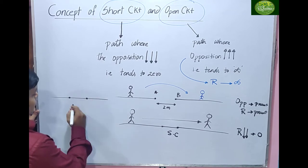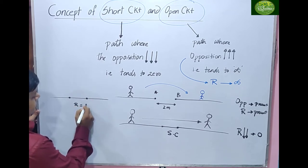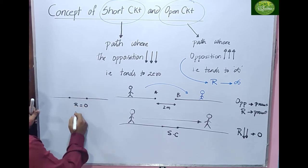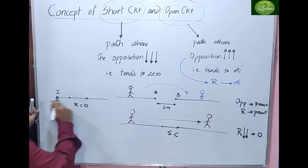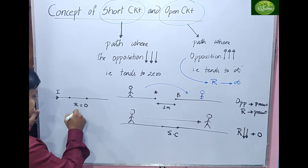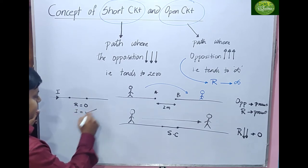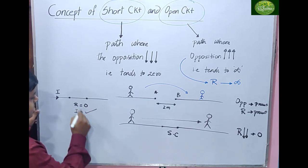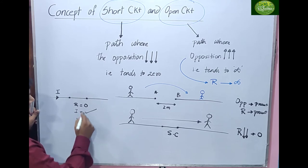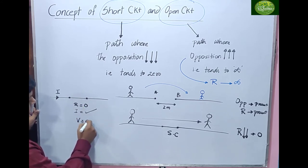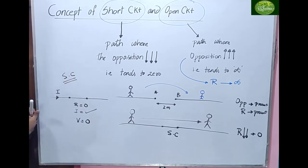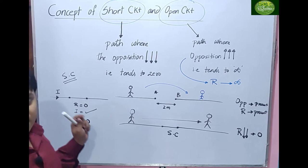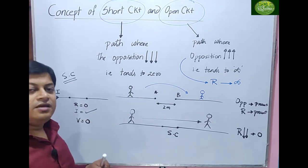Let's see this in the circuit. If it is a short circuit, the resistance here is zero. Can current flow? Yes, current will be flowing. What will be the voltage? V = IR = I × 0 = zero. So voltage will be zero. This is the condition for short circuit in an electrical circuit.